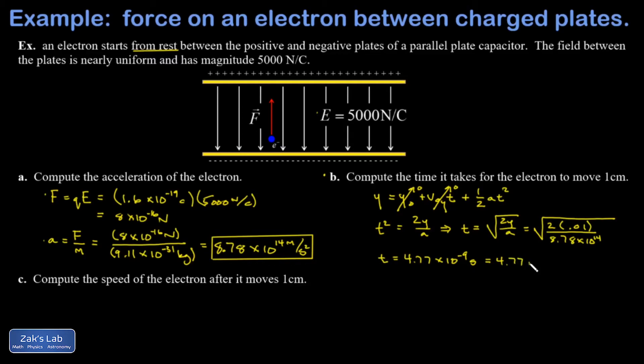In part C, I want to find the speed of the electron after it's moved by one centimeter. There's a couple different approaches to this. I could use the second kinematics equation, that's v equals v naught plus at, and then plug in the time that I already solved for. So my final velocity is going to be the initial, which was again zero, plus acceleration times time. When I run the numbers, I get 4.19 times 10 to the sixth meters per second.